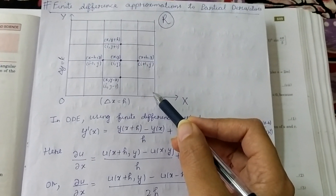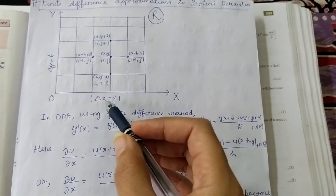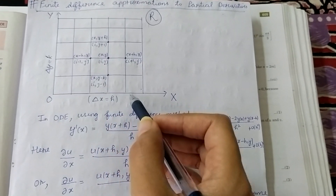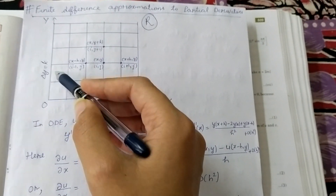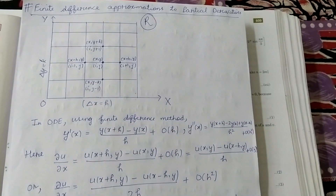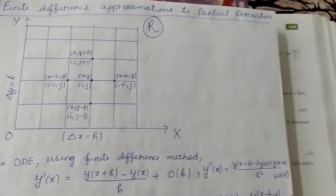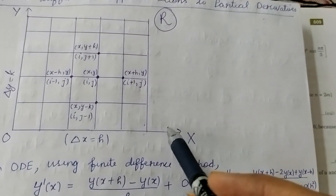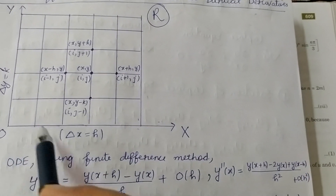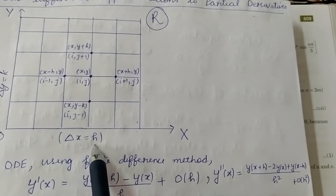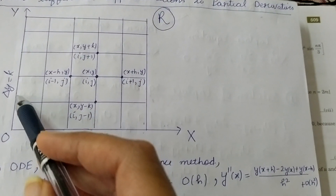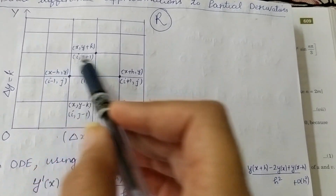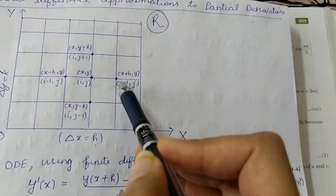We have divided this region into a rectangular network of sides delta x — these sides are delta x, this division is delta x — and on the other side it is delta y. So I have divided this region into subintervals of delta x equal to h, and on this side delta y equal to k. These dividing lines and the points where they intersect are called mesh points.